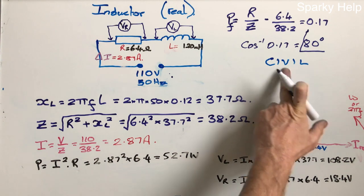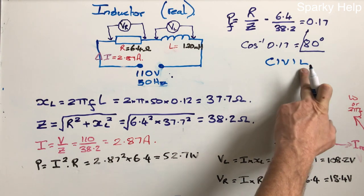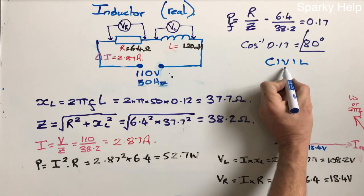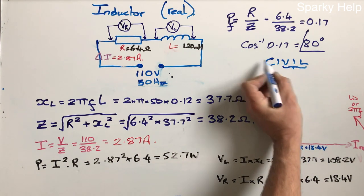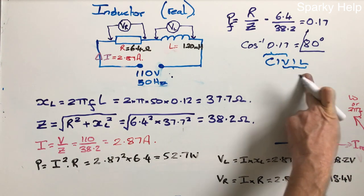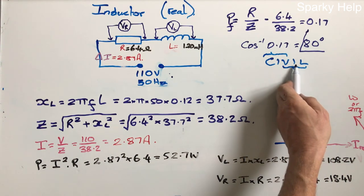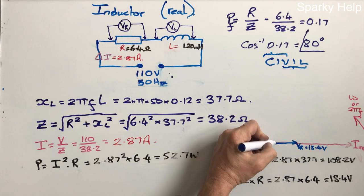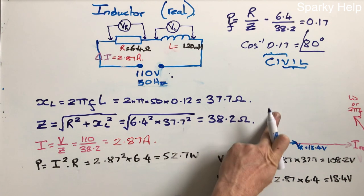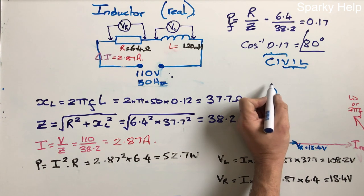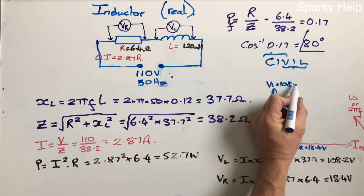And what we're basically looking at is the last three letters of CIVIL. V leads I in L. So C is capacitive, I is current, V is volts, I is current, L is inductive. So we're only ever looking at three at any one time in a circuit. If it's a capacitive circuit, you can look at the top one. If it's an inductive circuit, you can look at this one here. So V is in front of I in an inductive circuit, in L, and this is an inductive circuit. So as this is an anti-clockwise direction, V must be going up. So VL goes up by 90 degrees. Not to scale, VL, 108.2 volts.